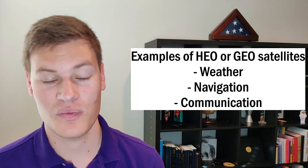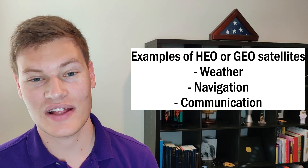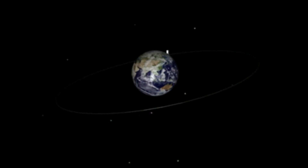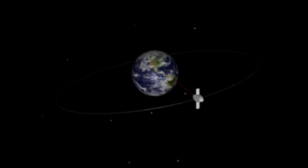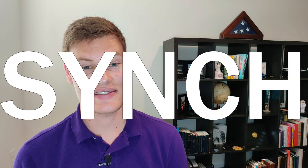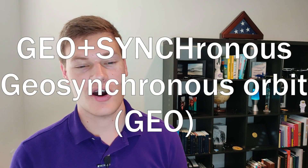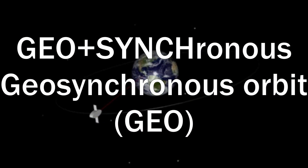High Earth orbit and geosynchronous orbits start from 22,000 miles and above. Satellites in high Earth orbit include weather satellites, navigation satellites, and some communication satellites. Probably the main advantage of high Earth orbit is the ability to achieve a geosynchronous orbit — an orbit around the Earth that takes exactly 24 hours, meaning the satellite exactly matches Earth's rotation. This allows the satellite to stay synced to a geographical location on Earth, monitoring a very specific region from an incredibly high vantage point with a wide field of vision.